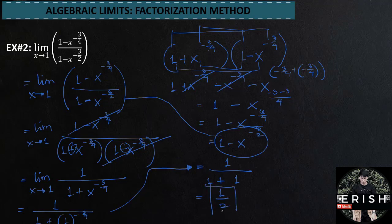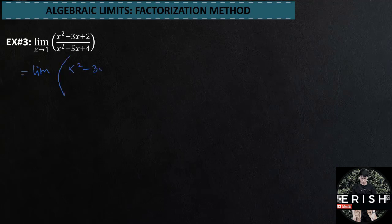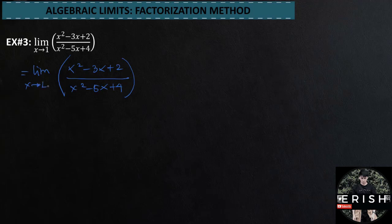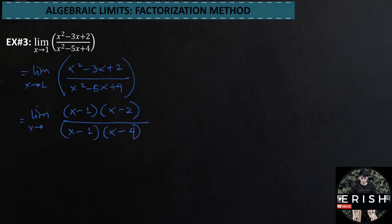And this is the answer for example number 2. Example number 3 for the factorization method: the limit of x squared minus 3x plus 2 over x squared minus 5x plus 4 as x approaches 1. Let's rewrite the problem. In this problem, we will factorize both the numerator and the denominator. The factors of the numerator x squared minus 3x plus 2 are x minus 1 and x minus 2, over the factors of the denominator: x minus 1 times x minus 4, as x approaches 1.